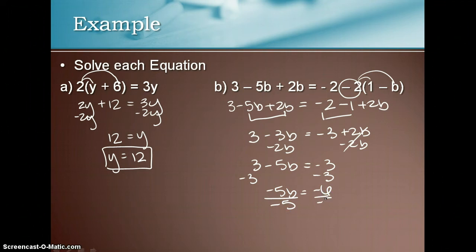Divide by negative 5. And that gives us b is equal to a positive 6 fifths. Make sure I did that all right real quickly. I'm going to look at it for a second here. And it looks like we're good.